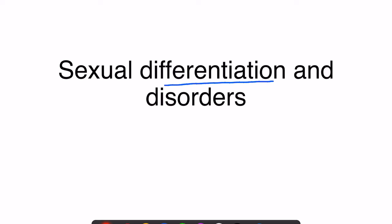Sexual differentiation is the process of development of sexual differences between male and female. In this video we are going to see what processes cause the development of these sexual organs in male and female, and if there is any problem in the differentiation, what disorders are going to result from it.